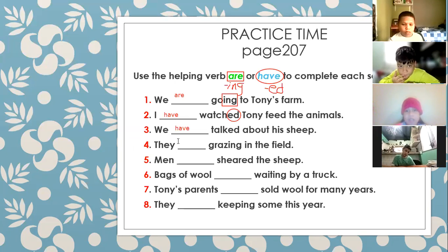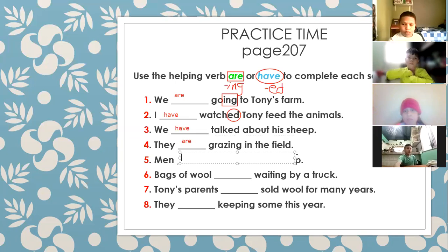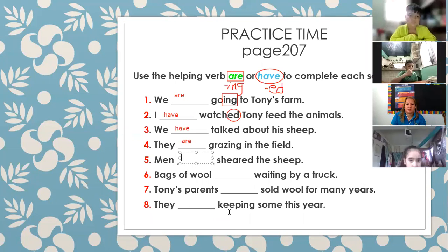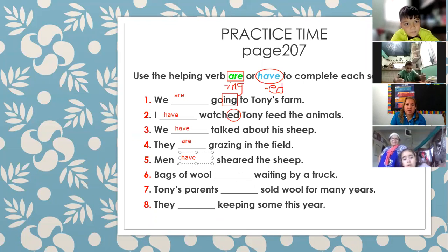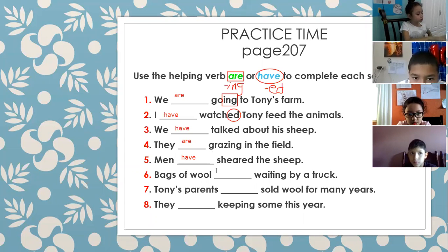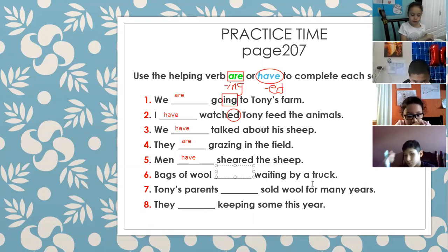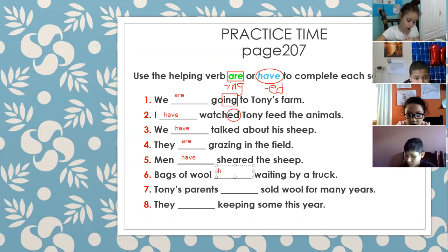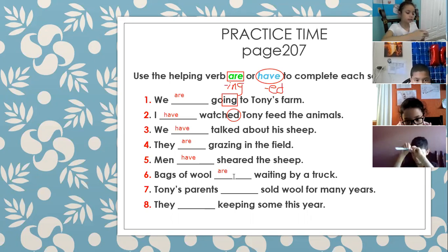Sentence four — Melanie: 'They are grazing in the field.' 'Are' — exactly, because the verb ends in -I-N-G. Sentence five — Victor: 'Men have searched the sheep.' 'Have' — exactly, because 'searched' ends in -E-D. Sentence six — Adriana: 'Bags of wool are waiting by a truck.' The verb 'waiting' finishes in -I-N-G, so the answer is 'are,' not 'have.'